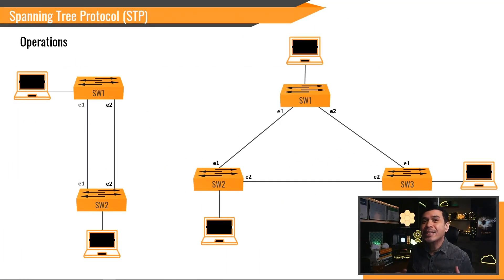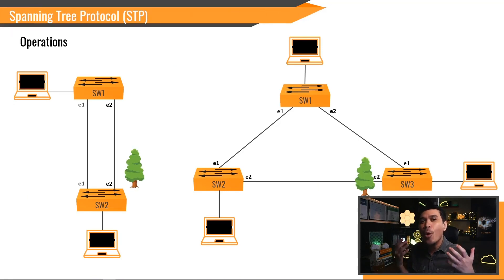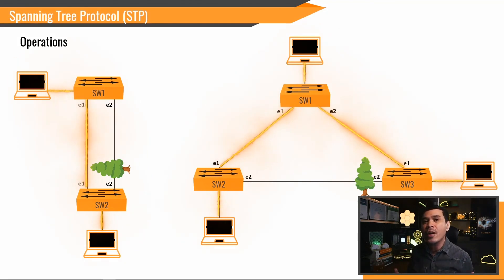Here is how spanning tree protocol operates. We have two network topologies in our example, and we need to block ports in order to prevent loops. By preventing loops, we now have more effective host-to-host communication in our redundant network topology without any issues.